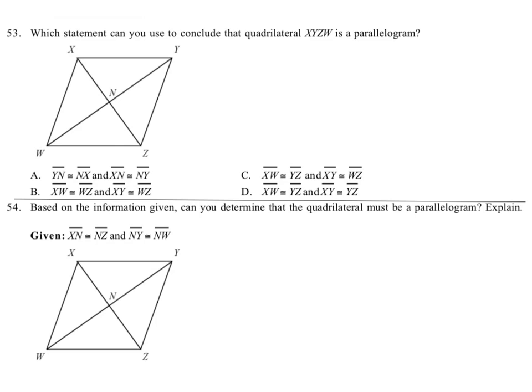Which statement can you use to conclude the quadrilateral is a parallelogram? We can either say that opposite sides are congruent, or we can have that each half of the diagonal is congruent to the other half because diagonals bisect each other. So let's see what we're looking at with this one.